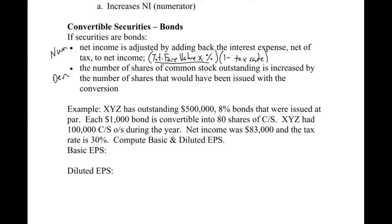Here's our example: the company has $500,000 of 8% bonds outstanding, issued at par. Each $1,000 bond is convertible into 80 shares of common stock. There were 100,000 common shares outstanding during the year — meaning no share transactions, so I don't need to calculate a weighted average for basic EPS. Net income was $83,000 and the tax rate is 30%. For basic EPS: net income of $83,000 minus preferred dividends (none in this problem) divided by 100,000 weighted average shares.